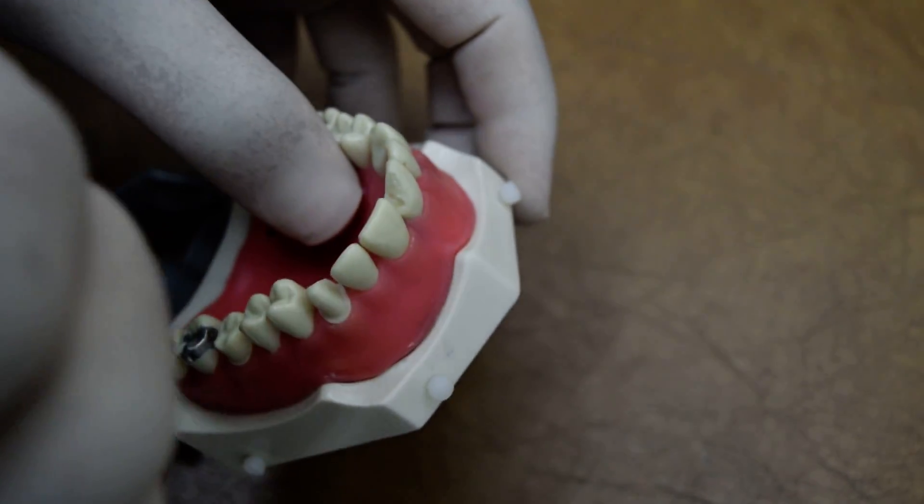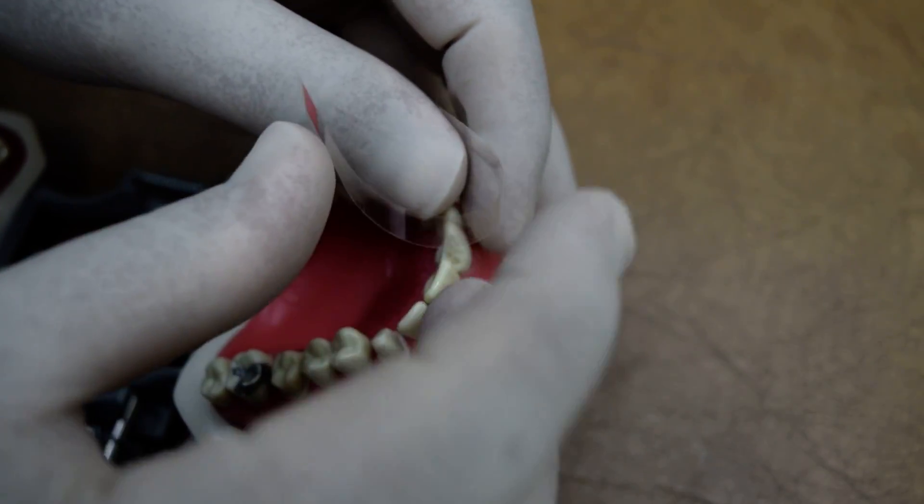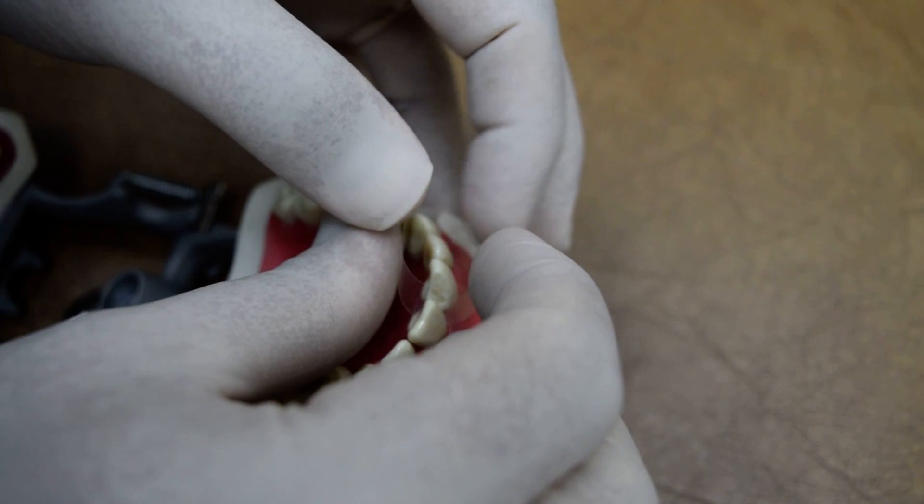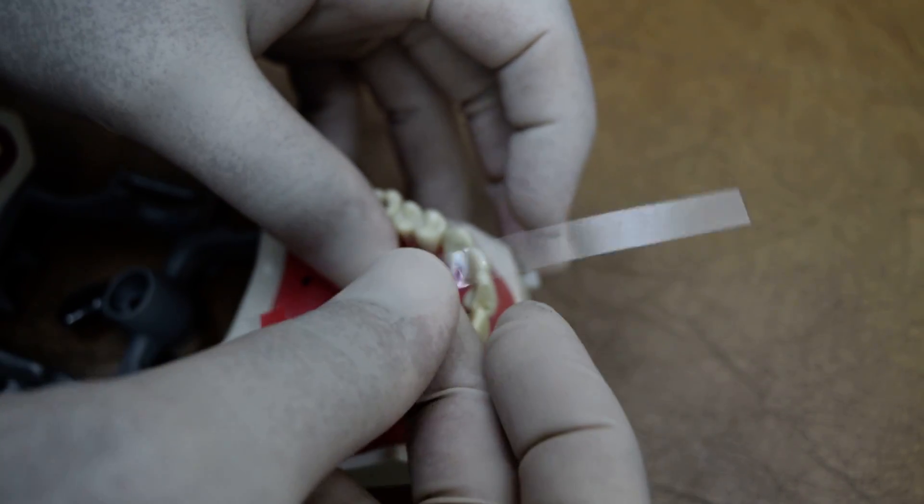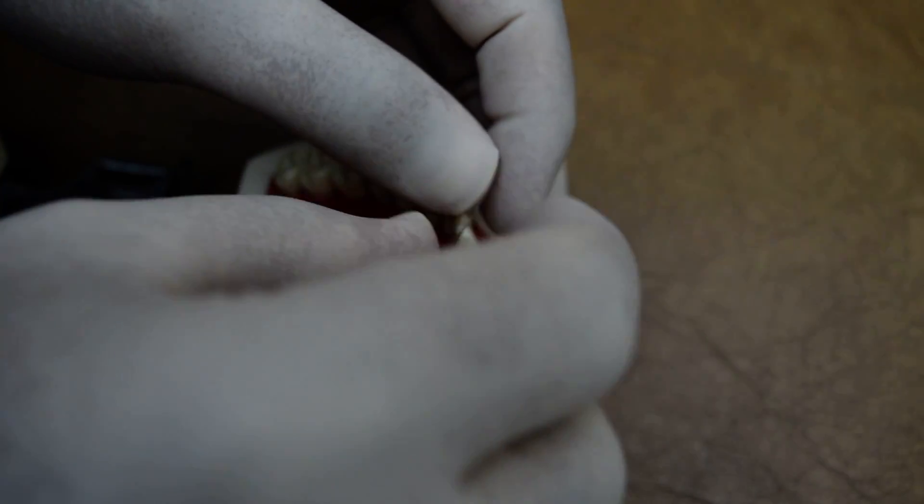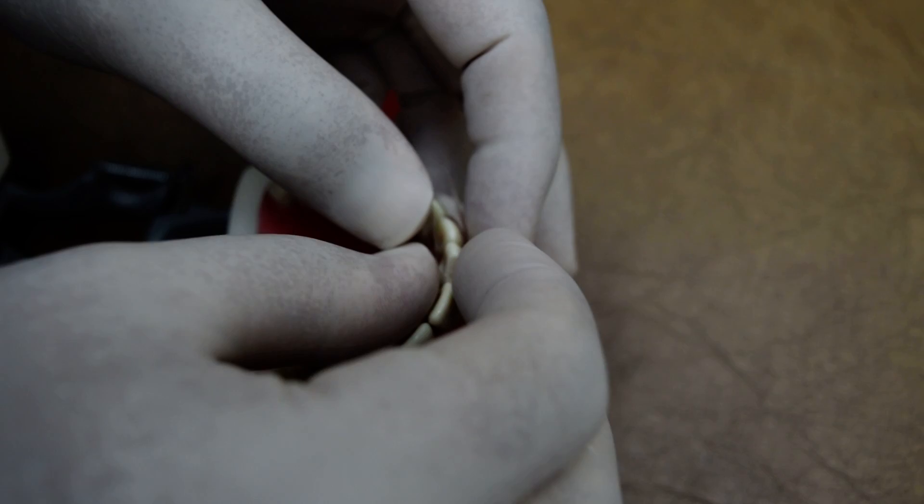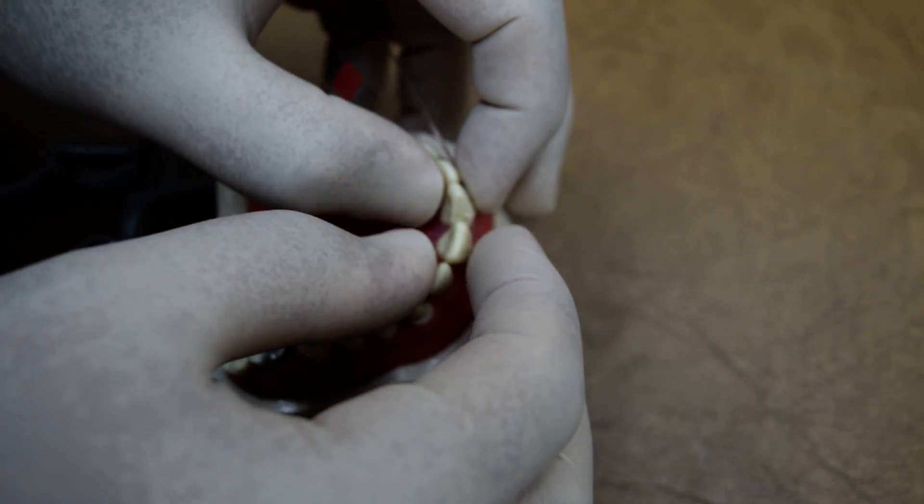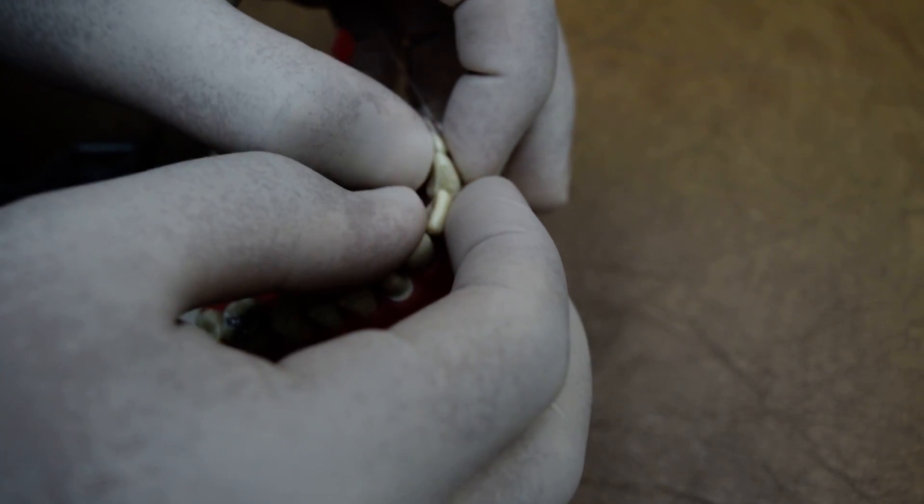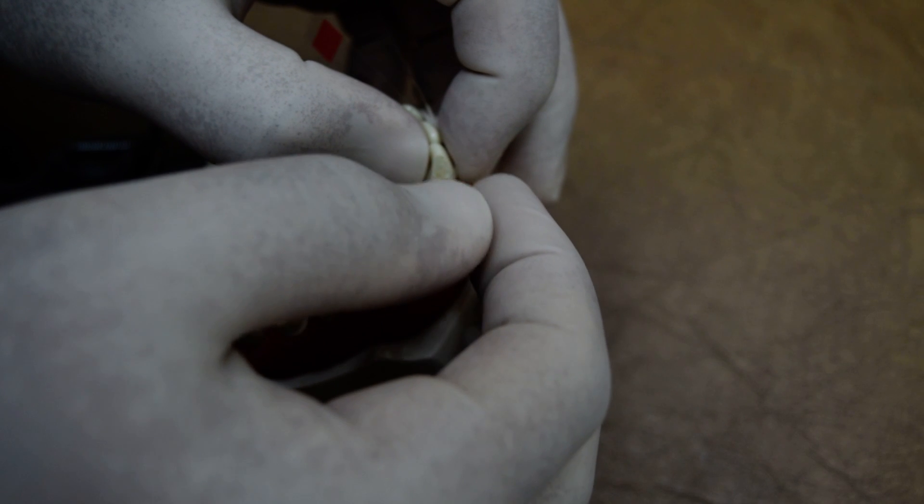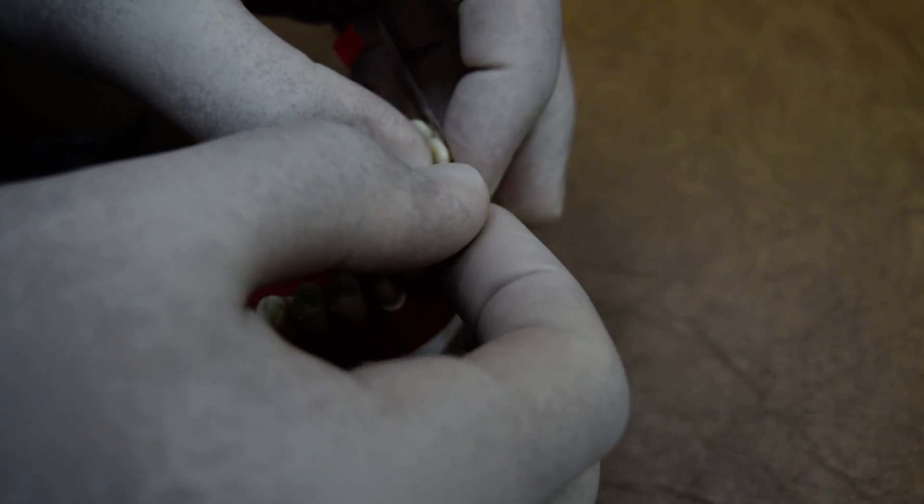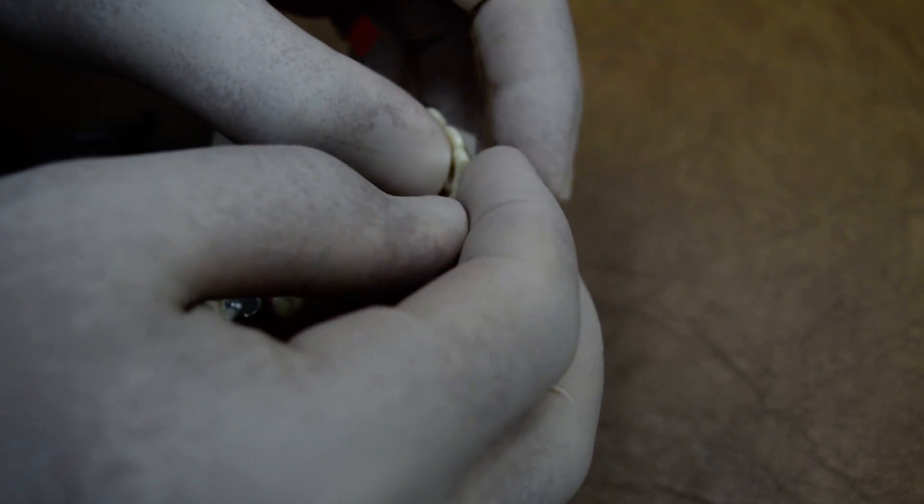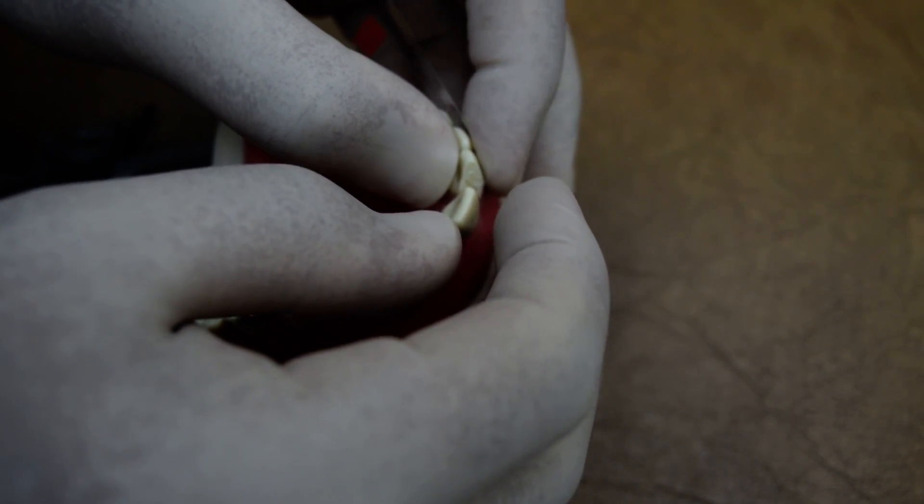Then to start the restoration, make sure that you have long transparent strip and appropriate wedges. I prefer using only flowable composite for the whole restoration, but it's okay to do it with packable as well, or do at least the palatal surface flowable and the labial packable.